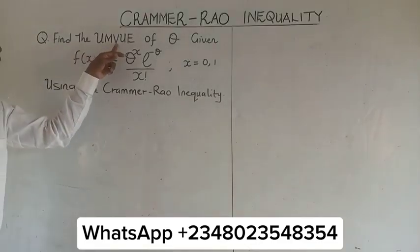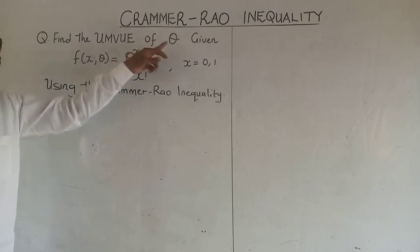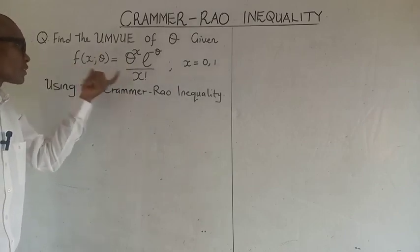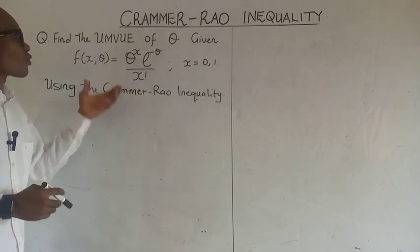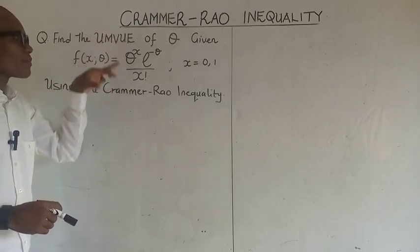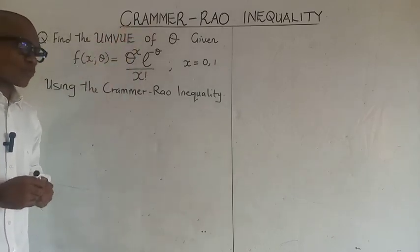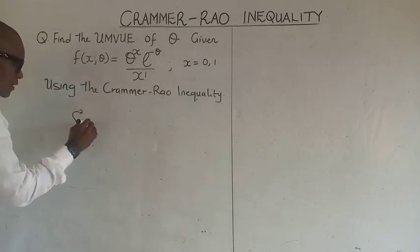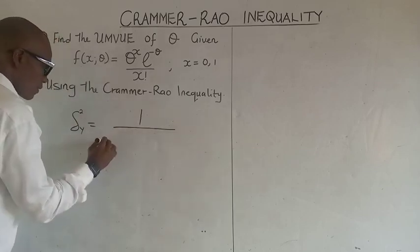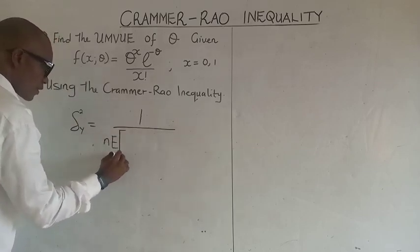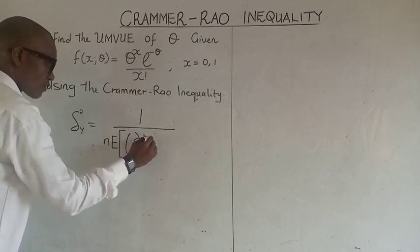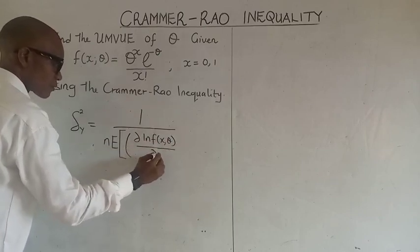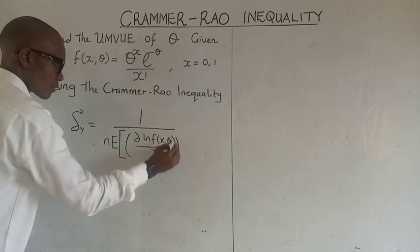Find the Minimum Variance Unbiased Estimator of theta given the distribution using the Cramér-Rao Inequality. This distribution is called the Poisson Distribution, so we'll be finding the unbiased estimator for this. The Cramér-Rao Inequality states that 1 over n times the expectation of the differential of the log function of any distribution.